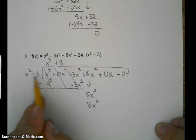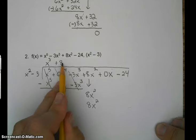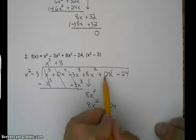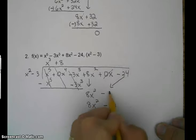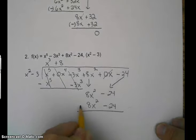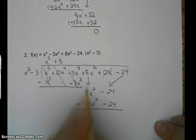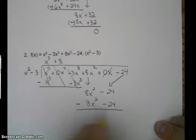And then negative 3 times 8, negative 24. So we don't need that. Let's bring down that minus 24. And let's subtract. So this cancels. Negative 24 minus negative 24, that cancels.